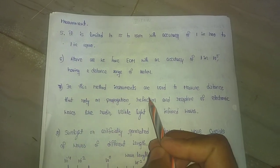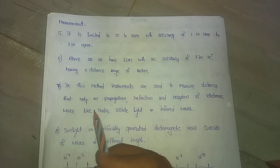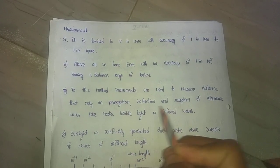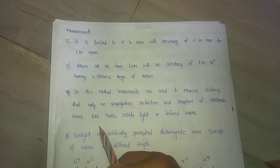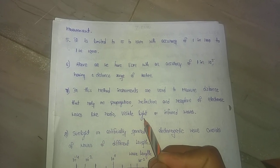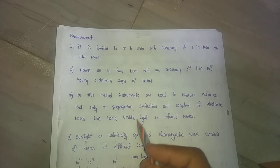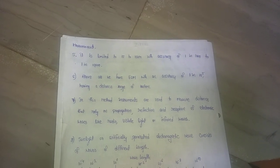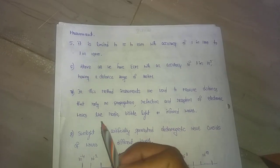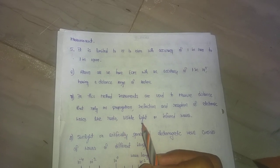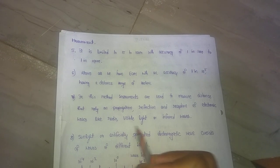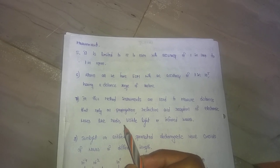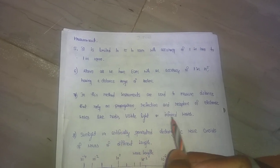In this method, instruments are used to measure distance that rely on propagation, reflection and reception of electromagnetic waves - like radio waves, visible light waves and infrared waves. We are using electromagnetic waves, radio waves and infrared waves to determine the distances between two points electronically.